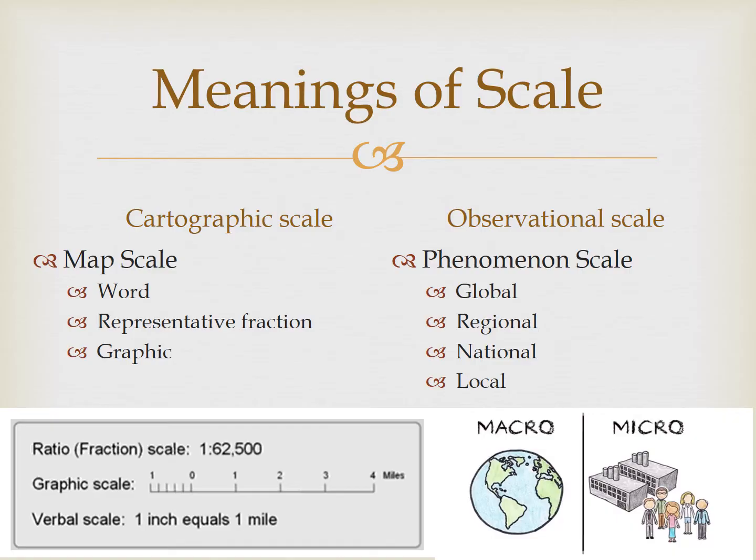The other side of this slide you're probably more familiar with. Phenomenon scale is the scale we use to describe at what level something is happening. Perhaps the best example is something we're all quite familiar with: COVID-19 was a global pandemic. That's the phenomenon scale — it's happening globally. The four most common types of phenomenon scale are global, regional, national, and local.